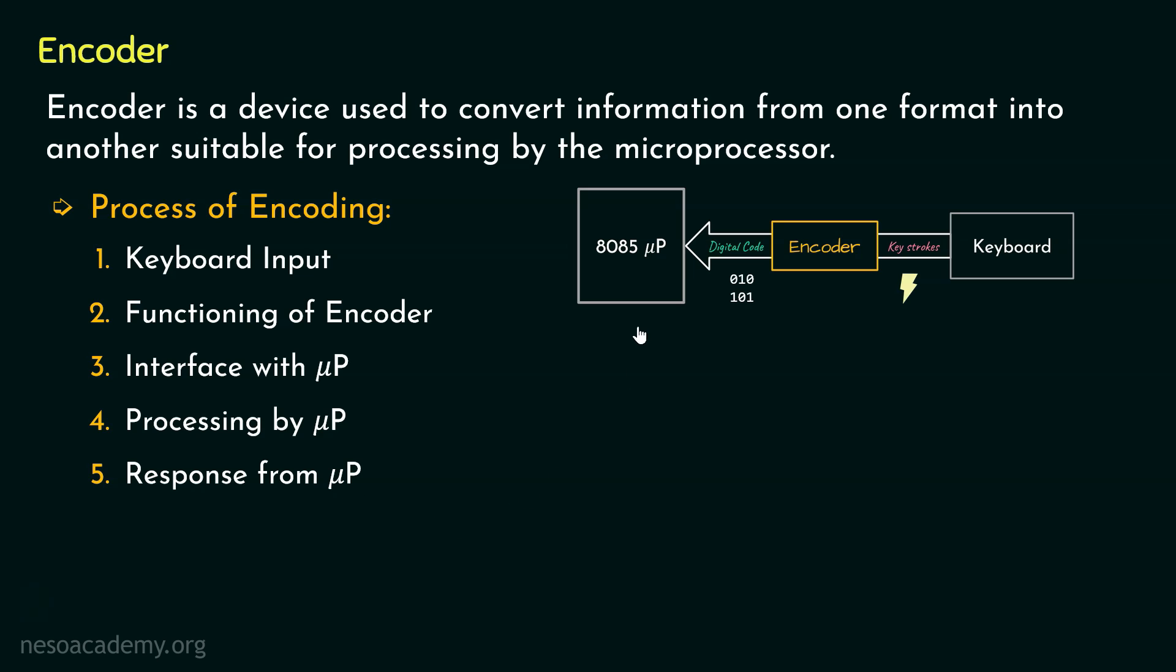So when we interface the microprocessor with the keyboard, the entire process of encoding will involve five different phases. Now to summarize, an encoder facilitates the communication between the external devices like the keyboard and the microprocessor by converting input signals from the device into a digital format which then can be processed by the microprocessor.